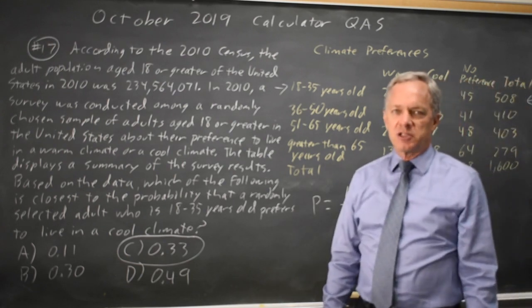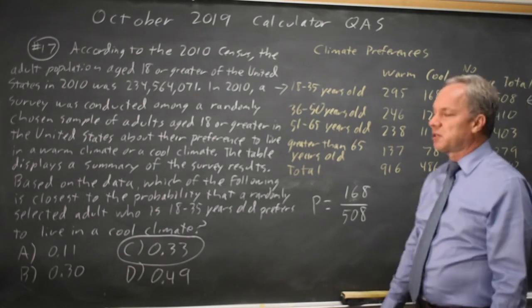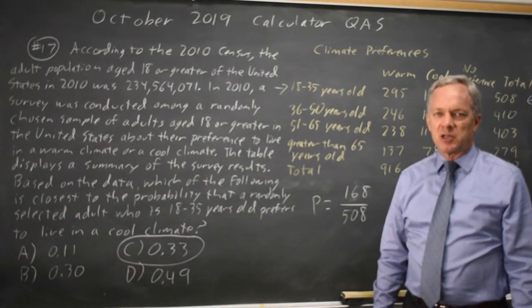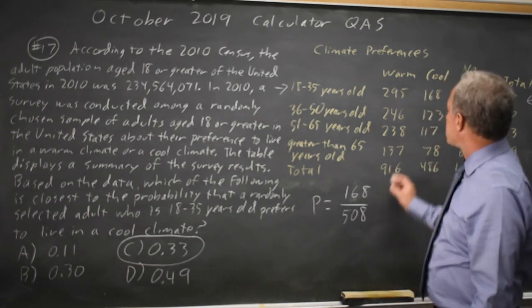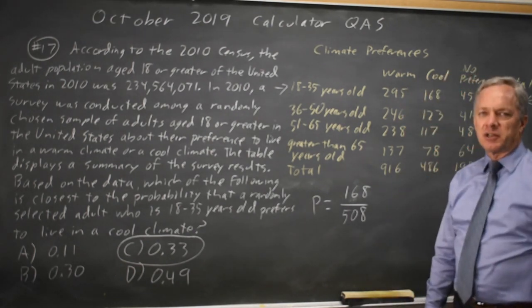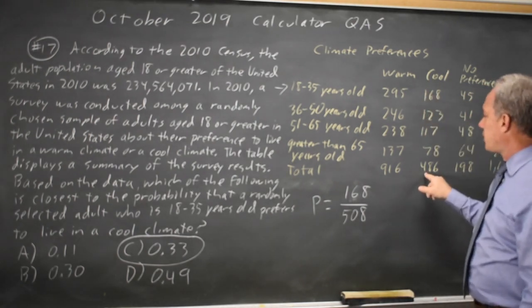They might have asked of all adults in the survey, in which case your denominator would be 1600. Or if they had said, among all those who prefer cool, if you randomly select an individual who prefers cool, what's the probability that they're 18 to 35? And that would give you 168 over the 486.